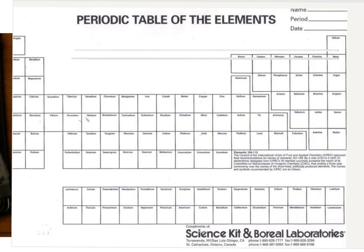Let's get started. The first thing I want you to do is get a marker or a highlighter and color in the line that separates our metals from our non-metals. That's going to be crucial because this area is what separates our metals from our nonmetals. Next, come over here and label your groups — one, two, three, four, five, six, seven, eight, nine, ten, eleven, twelve...